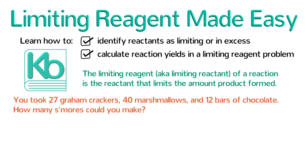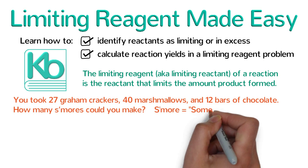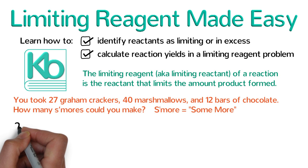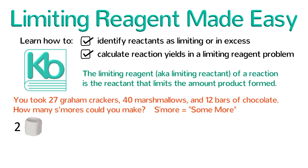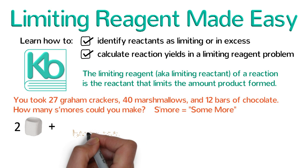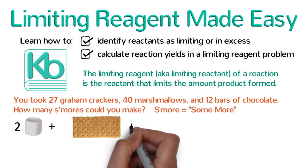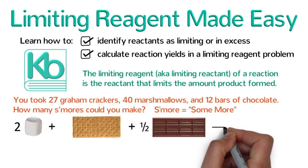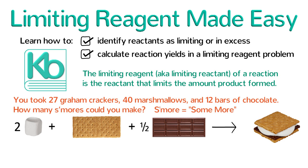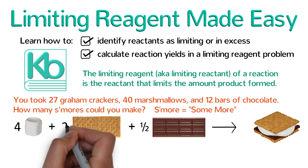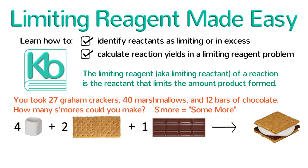The original s'mores recipe, which first appeared in the 1927 Girl Scout Handbook, calls for two marshmallows toasted to a crisp gooey state, one graham cracker split in half, and a half bar of chocolate to make one s'more. To eliminate the fractions, let's double the recipe: four marshmallows, two graham crackers, and one chocolate bar are needed to make two s'mores.